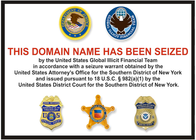The hierarchy of domains descends from the right to the left label in the name. Each label to the left specifies a subdivision, or subdomain of the domain to the right. For example, the label example specifies a node example.com as a subdomain of the com domain, and www is a label to create www.example.com, a subdomain of example.com.